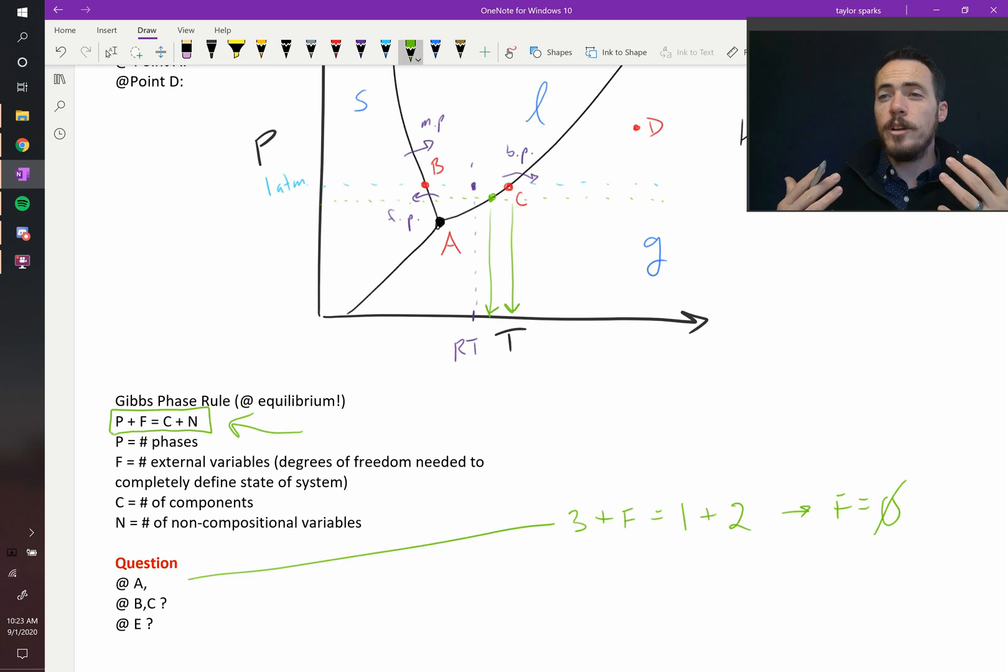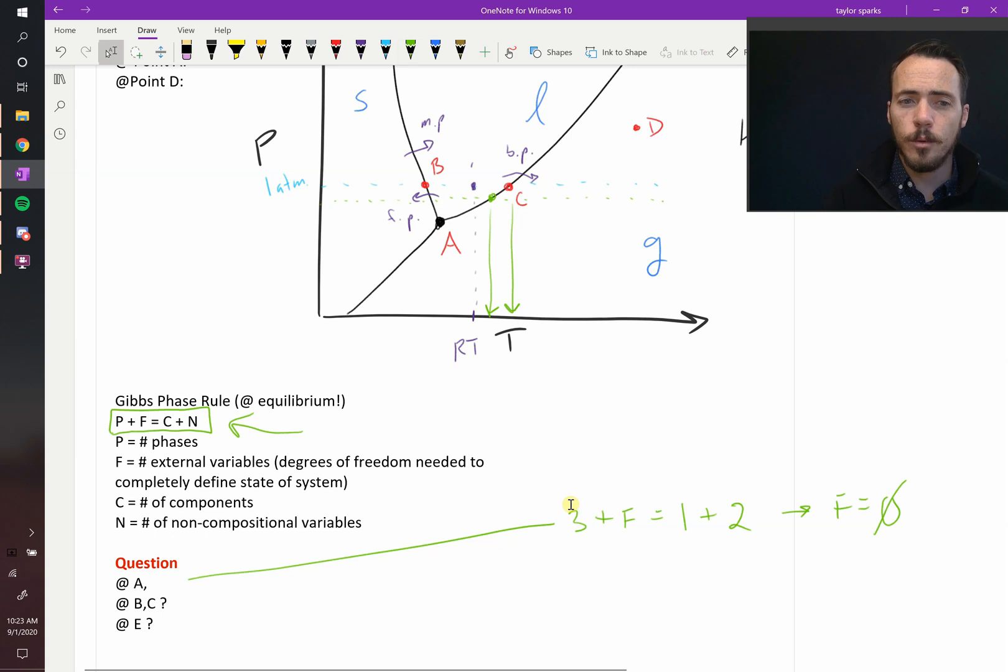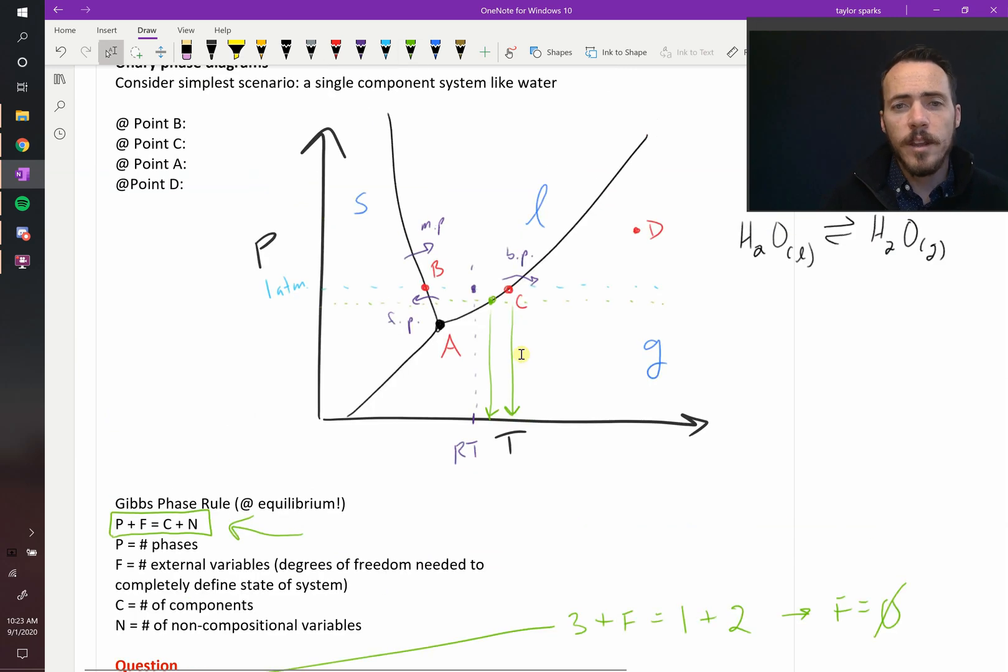Meaning the degrees of freedom is zero. What that's telling us is that there is nothing you can do. There's nothing you can change in this diagram where you can maintain three different phases in equilibrium with each other. And that's obvious because in this diagram, there's only this one point in the center there at point A where you can have all three phases in equilibrium.